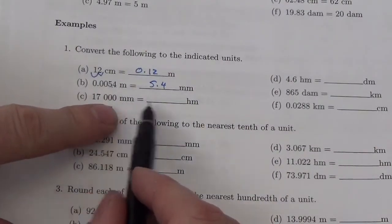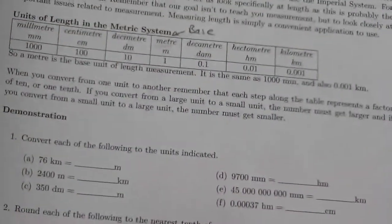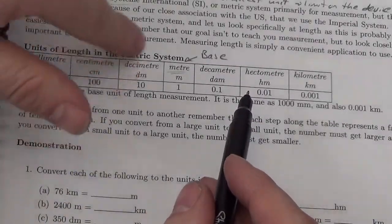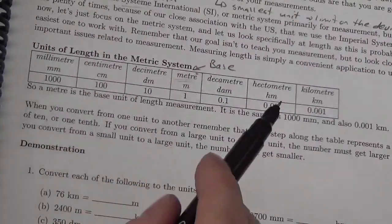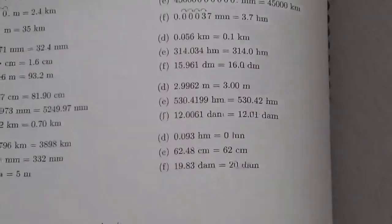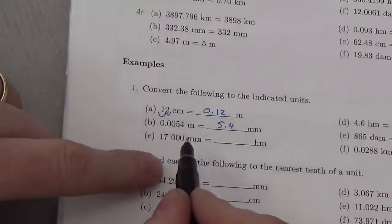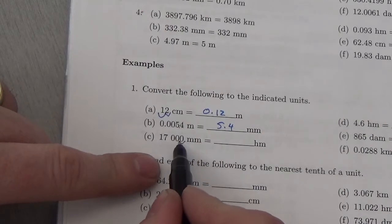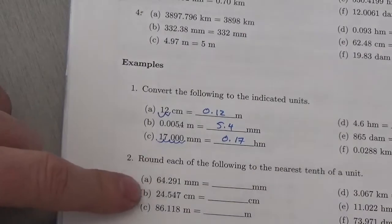Millimeters to hectometers — that's one, two, three, four, five jumps, and I'm going from small to large, so the number has to get smaller. That's five steps, and the decimal moves five places to the left, giving us 0.17 hectometers.